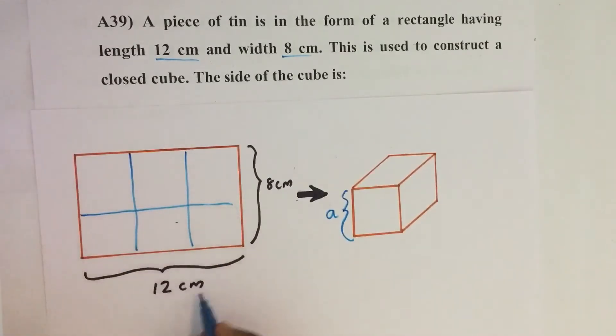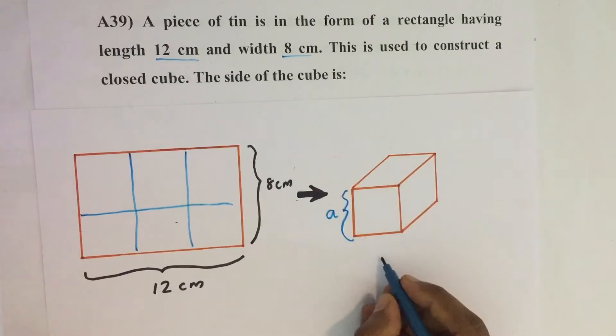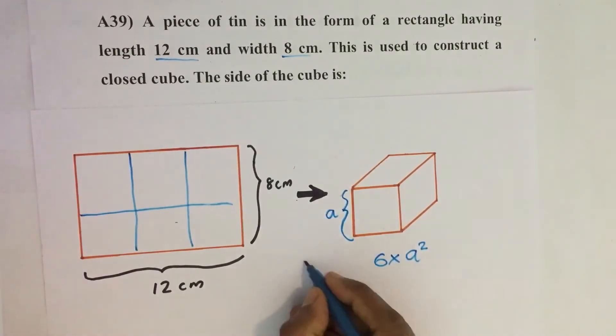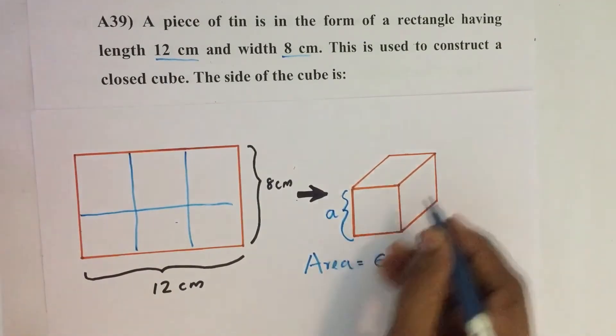So here this cube has 6 faces. So if the side is A, then the surface area of the cube equals 6 into A square. So here this is the surface area of the cube.